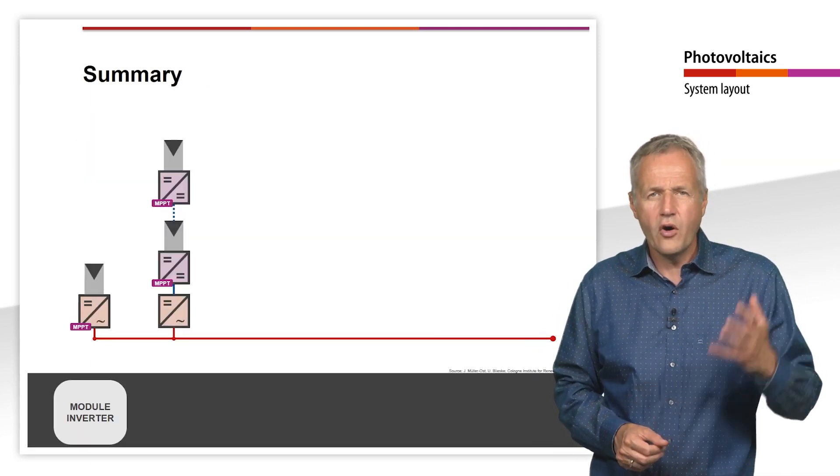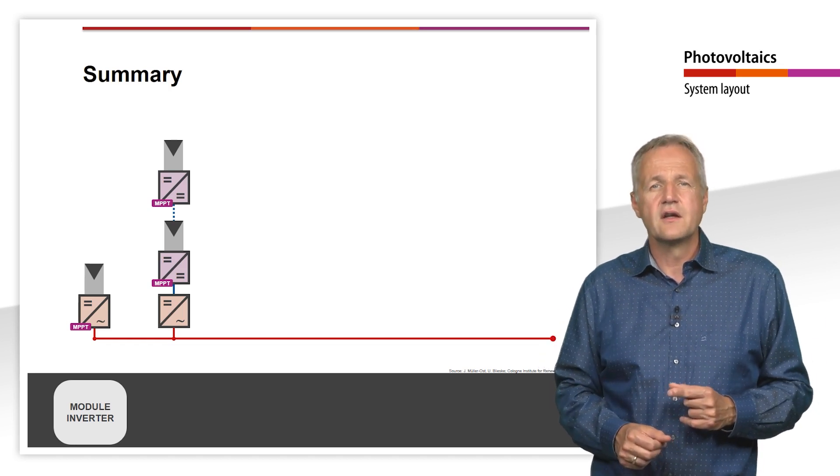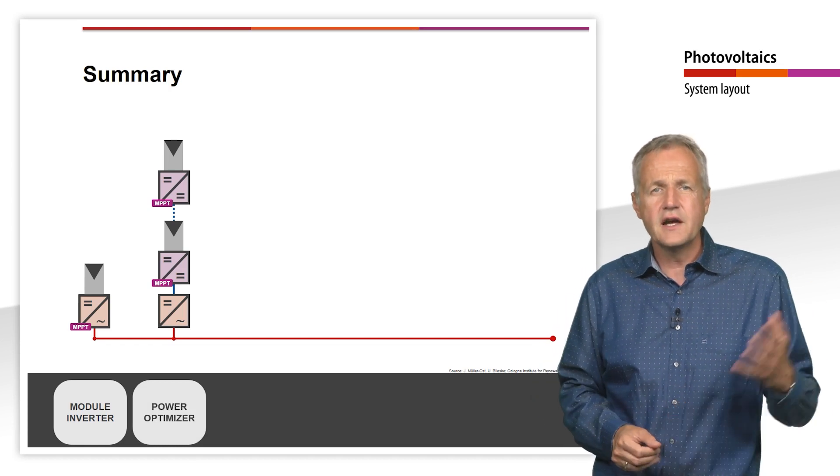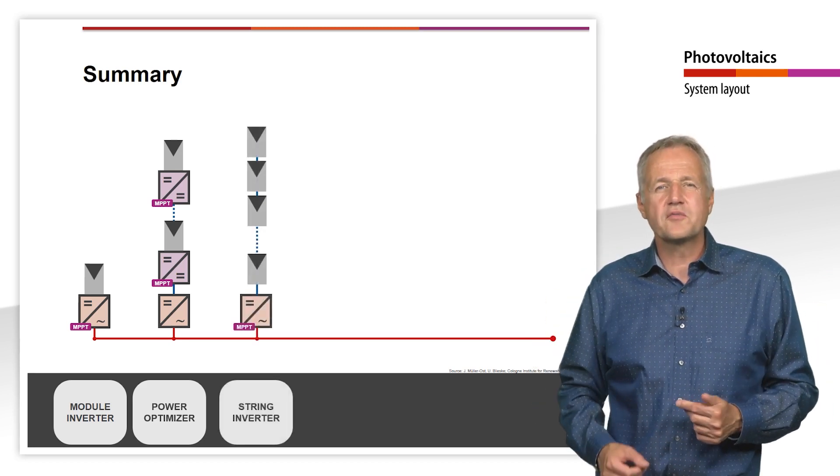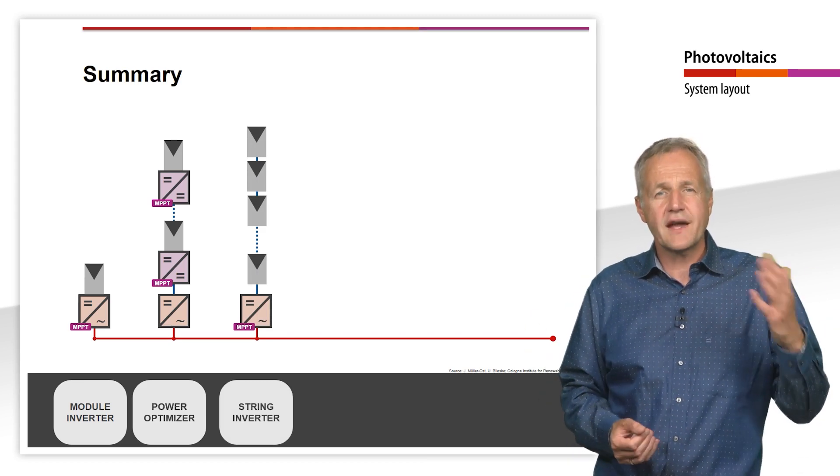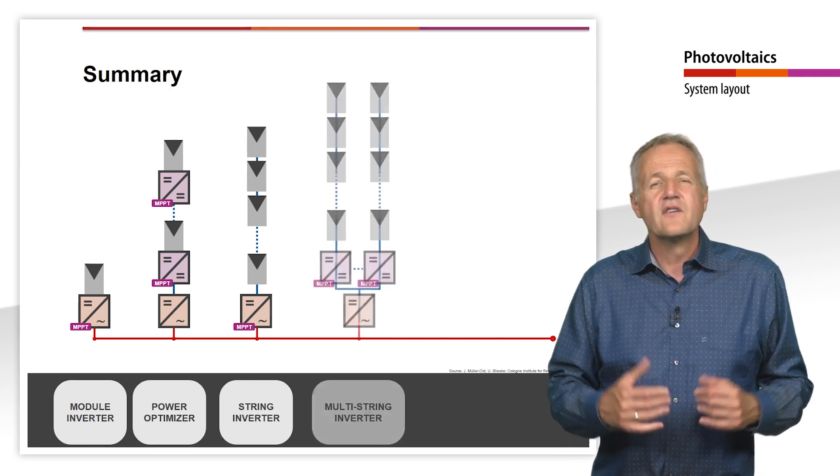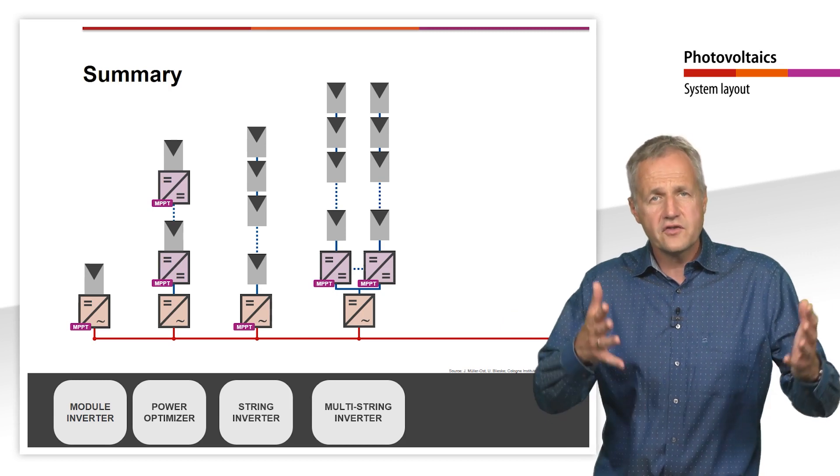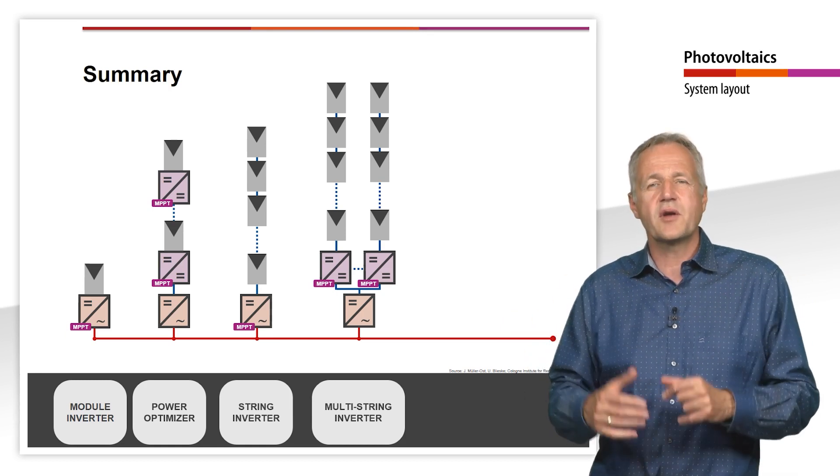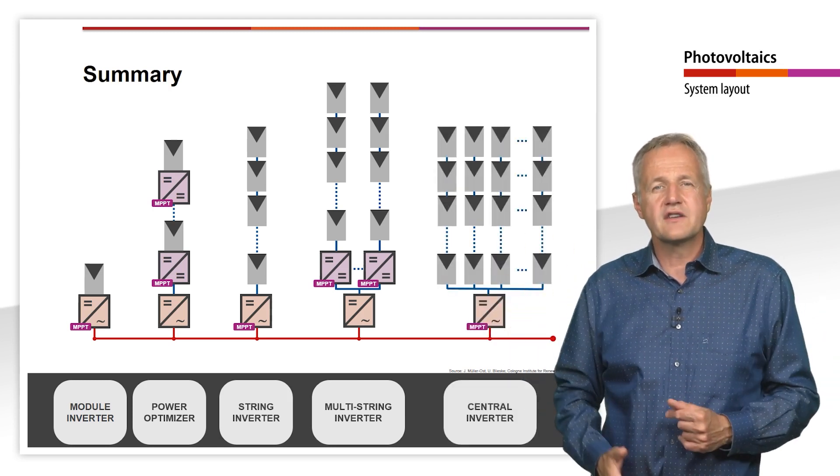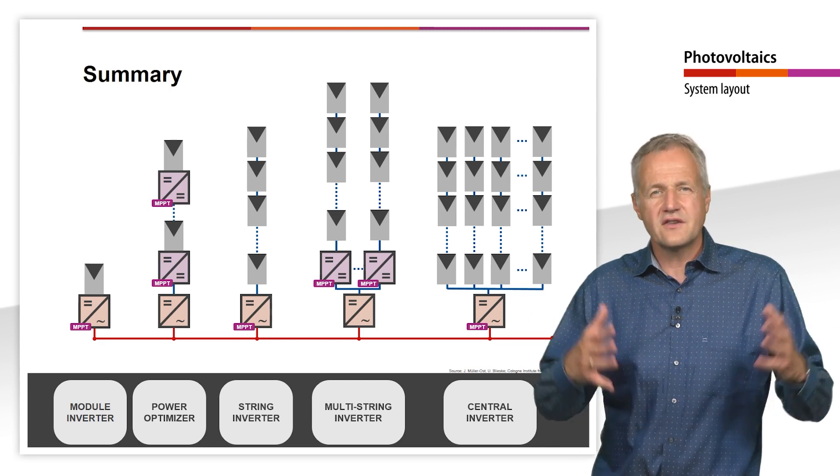Let's summarize what we have learned. The smallest inverters are module inverters, which are especially useful in systems with few modules and different orientations or shading. The string inverter is most commonly used for small systems. Here, all modules are connected to form a string and operated at the same operating point. The power optimizer concept combines the advantages of module and string inverters. In this case, MPP tracking takes place on the module level, but conversion to AC takes place in a string inverter without MPP tracking. With increasing plant size, multi-string inverters are used instead of string inverters. Here, the MPP of the different strings is determined individually, but the conversion into alternating current takes place centrally. Very large systems are operated with one or more central inverters. Several module strings are connected in parallel for this purpose. All modules are operated at the same operating point.